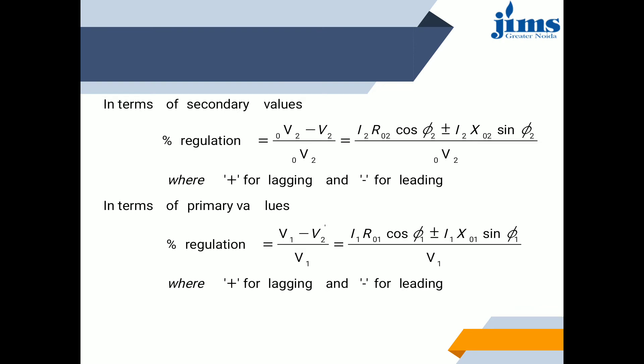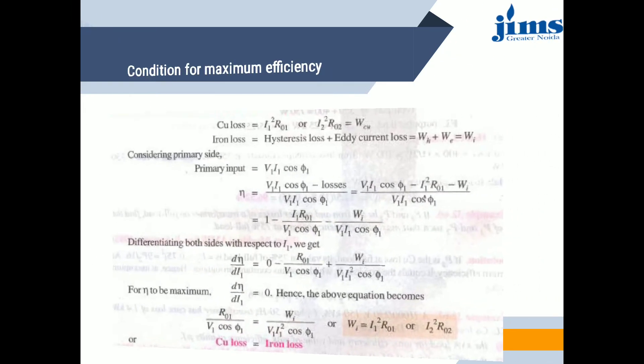In terms of secondary values, percentage voltage regulation = (V02 − V2) / V02, which can also be written as (I2·R02·cos φ2 ± I2·X02·sin φ2) / V2, where the positive sign is for lagging and negative for leading power factor. In terms of primary values, percentage voltage regulation = (V1 − V2) / V1, which equals (I1·R01·cos φ1 ± I1·X01·sin φ1), where positive is for lagging and negative is for leading.